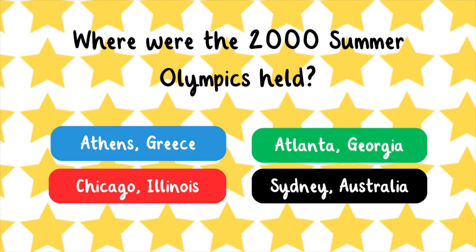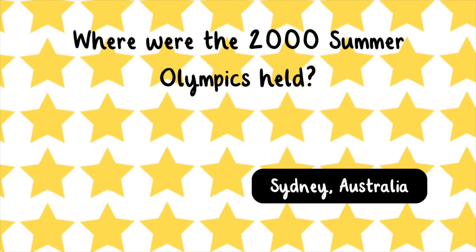Where were the 2000 Summer Olympics held? Athens, Greece, Chicago, Illinois, Atlanta, Georgia, or Sydney, Australia? The 2000 Summer Olympics took place in Sydney, Australia.